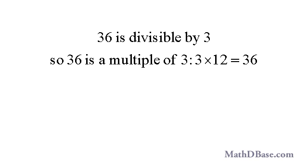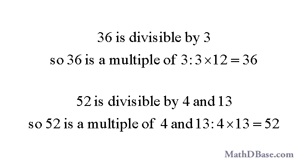If one whole number is divisible by another, then the first number is a multiple of the second. For example, since 36 is divisible by 3, 36 is a multiple of 3 — that is, 3 times 12 equals 36. 52 is a multiple of both 4 and 13, since both numbers divide 52, and 4 times 13 equals 52.